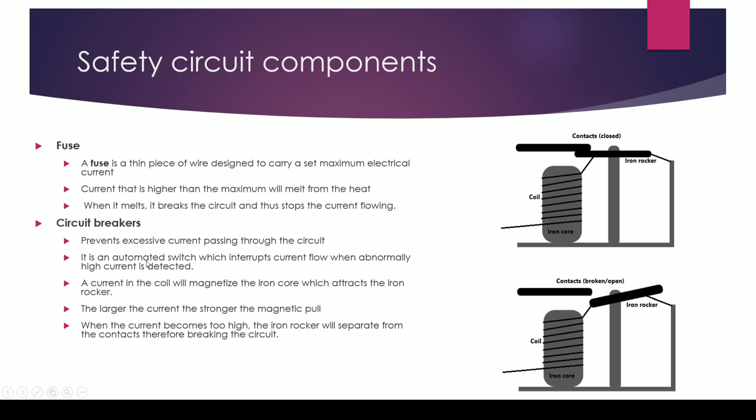Circuit breakers similarly prevent excessive current passing through a particular circuit. It is an automated switch which interrupts current flow when abnormally high current is detected. How does it do this?